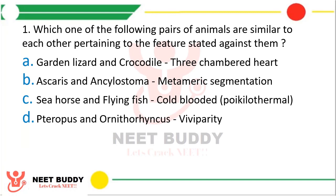Question number 1. Which one of the following pairs of animals are similar to each other pertaining to the features stated against them? Option A: Garden lizard and crocodile — three-chambered heart. Option B: Ascaris and Ancyclostoma — metameric segmentation. Option C: Seahorse and flying fish — cold-blooded. Option D: Therapsids and Ornithorhynchus — viviparity.